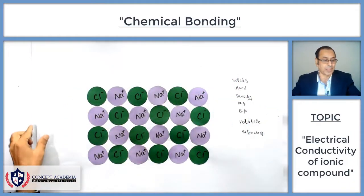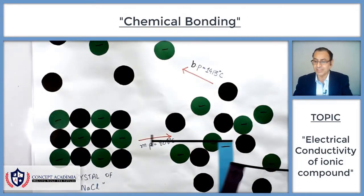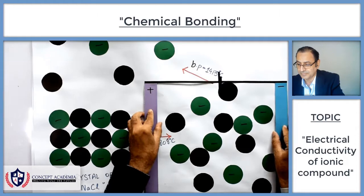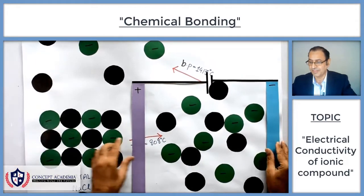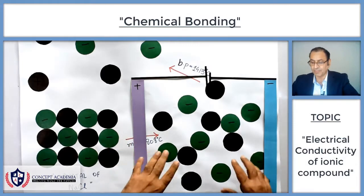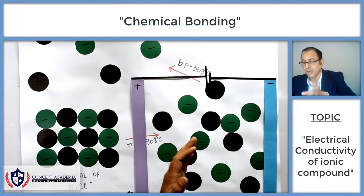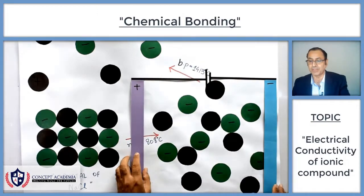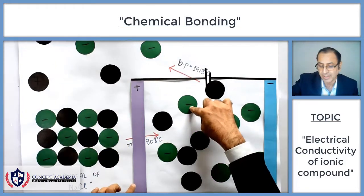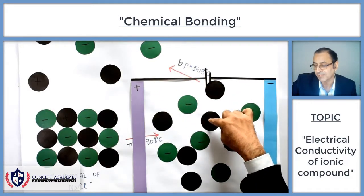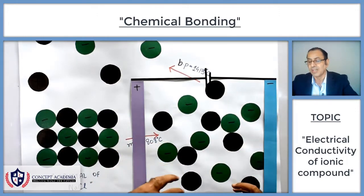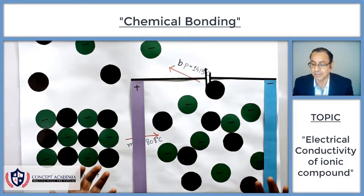But in the molten state, when we melt an ionic compound, the positive and negative ions are away from one another and can move from their place. They can move from one point to another. So if the battery is operated, the negative ions will move towards the positive plate and the positive ions will move towards the negative plate. Because of the movement of these positive and negative ions, electricity can be conducted.